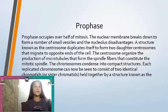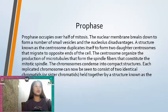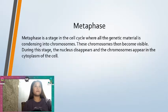The chromosomes condense into compact structures. Each replicated chromosome can now be seen to consist of two identical chromatids, or sister chromatids, held together by a structure known as the centromere.